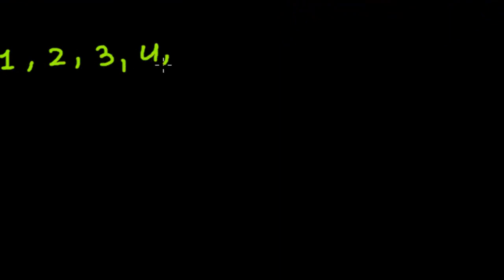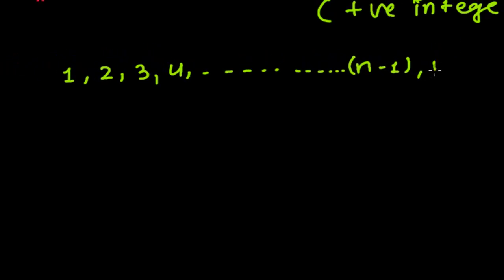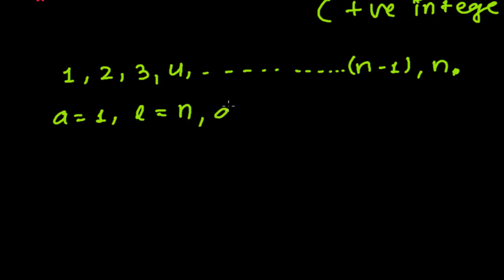So always the natural numbers start from one, then two, then three, four, and so on, up to n minus one, and this is the nth term. We are finding the formula for the sum of natural numbers starting from one and ending at n. Our first term is one, the last term is n, and the common difference is one.